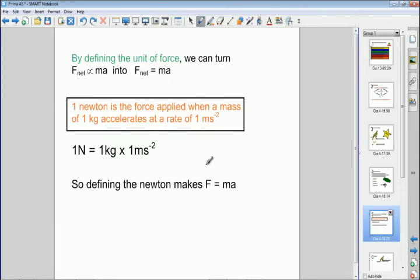So in order to turn this proportionality, F_net is proportional to Ma, into F_net equals Ma, we need to include a constant which is equal to 1. And the way we do that is we define the Newton as the unit of force. And when we define the Newton as a unit of force, this equation has a constant of 1 and therefore becomes F_net equals Ma.